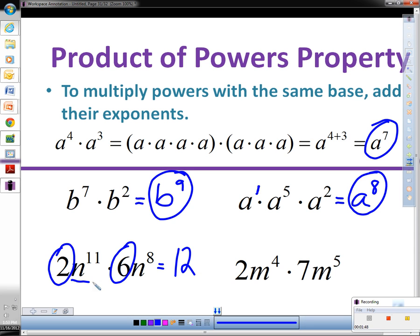Now we can combine the powers together since they have the same base of n. We leave the base n and we add eleven plus eight and we get nineteen. So our answer, our simplified answer, is twelve times n to the nineteenth power.